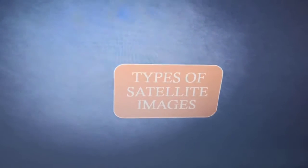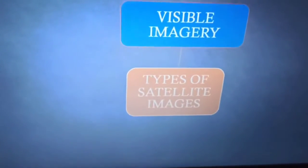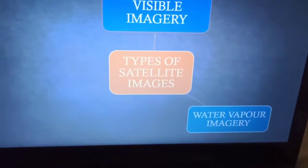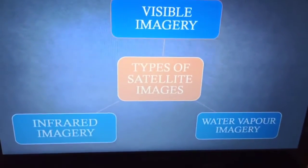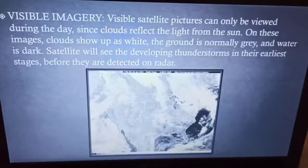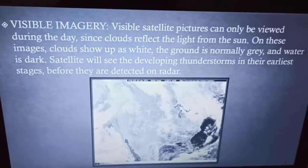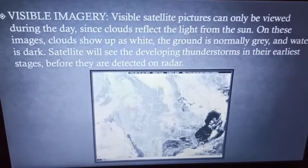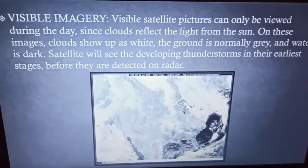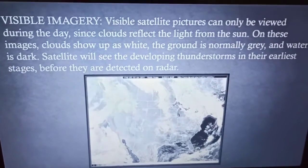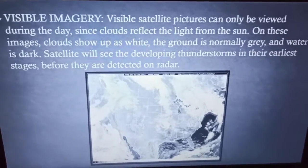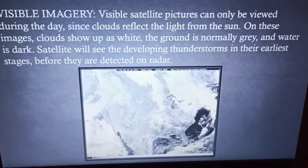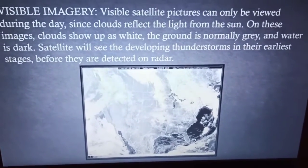Today I'm going to discuss the different types of satellite imagery. Number one is visible imagery, number two is water vapor imagery, and number three is infrared imagery. Visible satellite pictures can only be viewed during the day. Since clouds reflect sunlight, clouds show up as white, the ground appears normally gray, and water is dark. The satellite can detect a developing thunderstorm in its earliest stage before it is detected on radar.